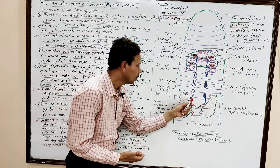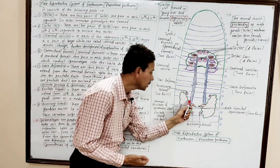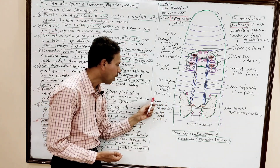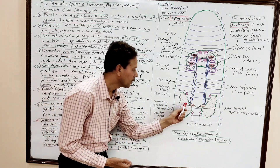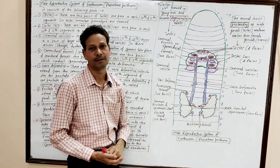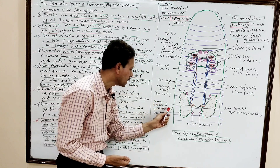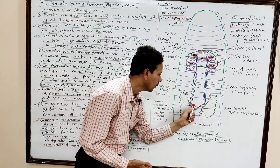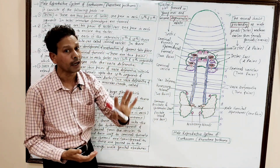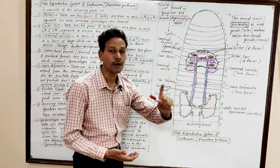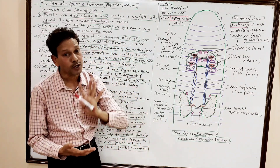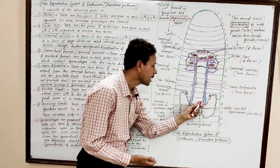In segment number 18, the vasa deferentia join the prostate duct. Three ducts — two vasa deferentia and one prostate duct — are enclosed in a common muscular sheath called the common prostate and spermatic duct. These ducts open in the mid-ventral part of segment number 18 by a pair of male genital apertures.